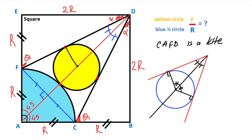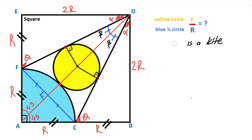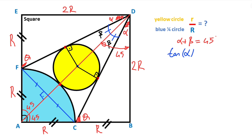So if we draw the perpendicular lines, let's call this angle beta — here is also beta. We know that angle ADB is 45 degrees. That means alpha plus beta equals 45 degrees. So if we take the tangent of both sides of the equation: tangent(alpha + beta) equals tangent(45 degrees).